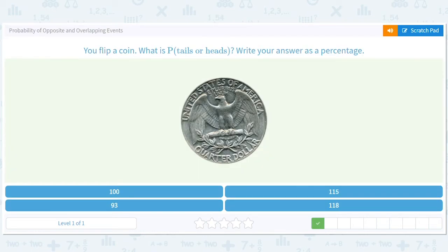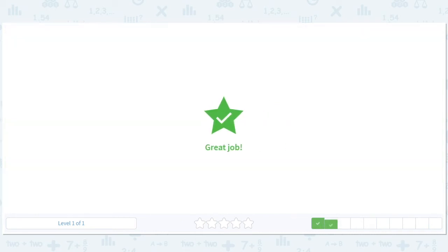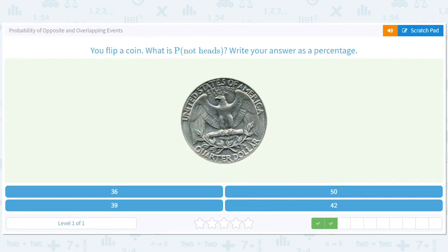It's like saying, hey, I play this game. What are the chances I either win or lose? Well, if you can't tie, then it's 100%.